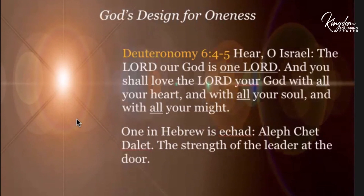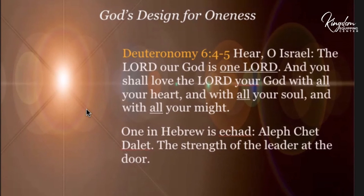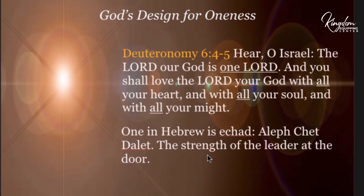Deuteronomy 6:4-5 is a very important prayer: 'Hear, O Israel, the Lord our God is one Lord, and you shall love the Lord your God with all your heart and with all your soul and with all your might.' One in Hebrew is 'echad,' which is an aleph, a ket, and a dalit. If you put the meanings of them together, one way of interpreting it is 'the strength of the leader at the door.'